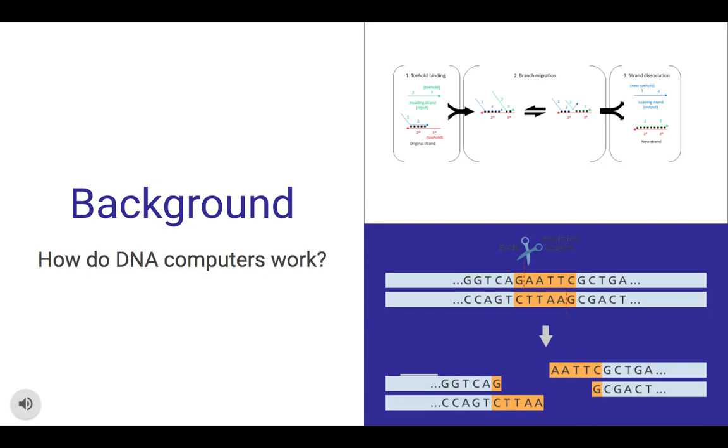In one method, called DNA strand displacement, which is the image above, you have an input strand of DNA that binds to a DNA logic gate. And this displaces a third strand of DNA, which serves as an output DNA strand. In another method, input DNA binds to a DNA logic gate and releases enzymes to cut other strands of DNA, which go and bind and release. And this creates sort of a chain reaction.